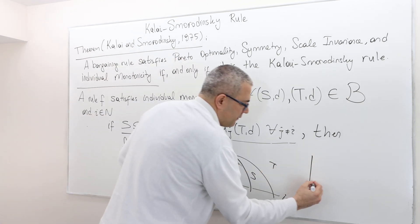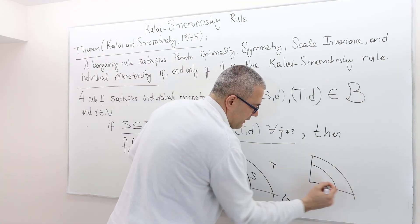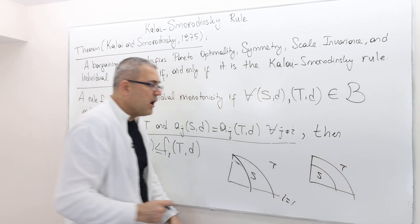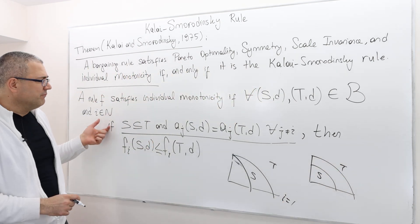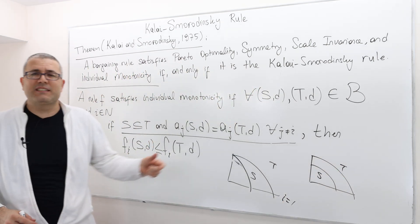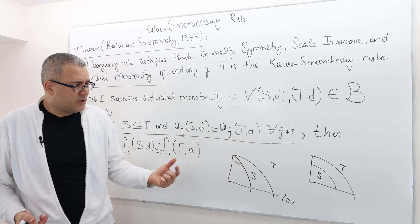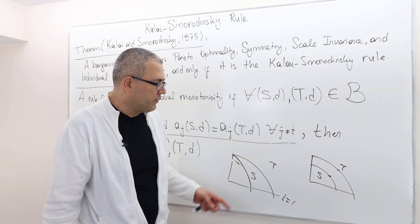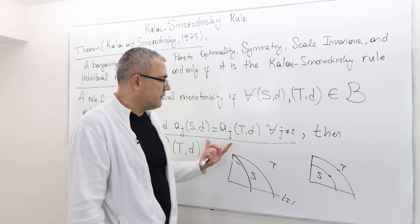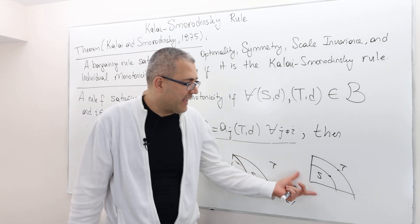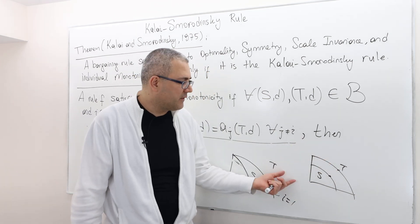Well, what if, however, we have something like this? This is S, this is T. Well, in this case, this property doesn't say anything. Well, why is that? Okay, I think it is important to underline why this rule doesn't say anything about cases like this.